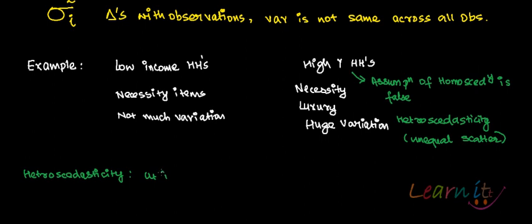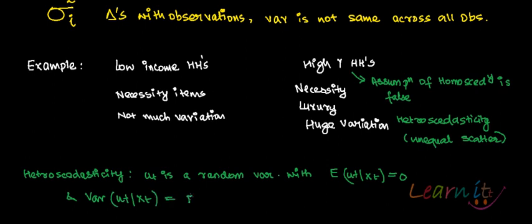ut is a random variable with E of ut given xt equals to 0. That is, error terms on an average are equal to 0. And here the assumption changes. Variance of ut given xt, which is also equal to E of ut square given xt, is equal to sigma square t.